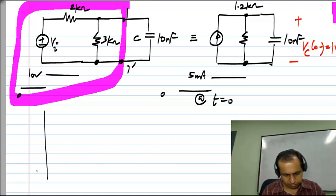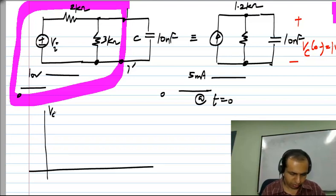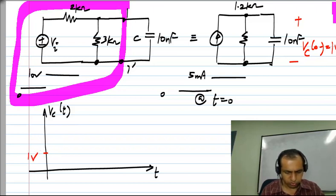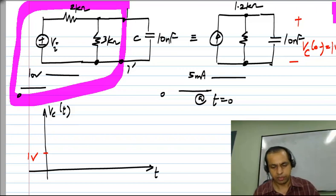So I will show this as a sketch. So at T equal to 0 minus and 0 plus will have 1 volt.